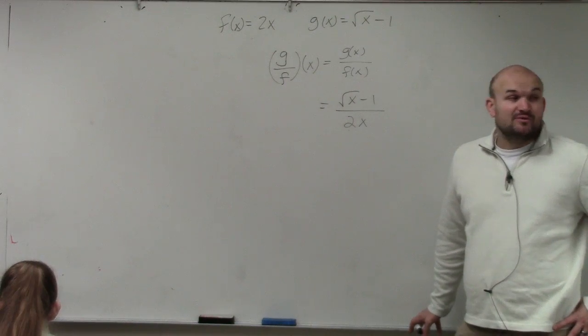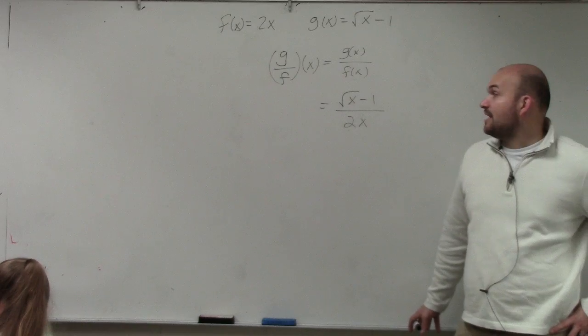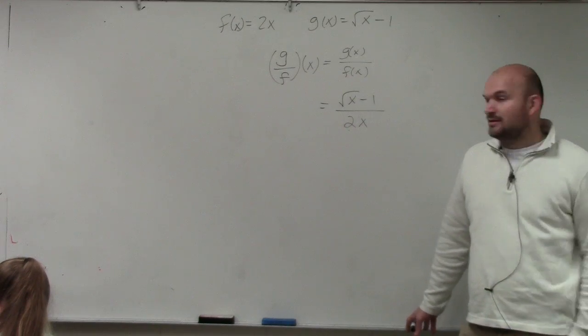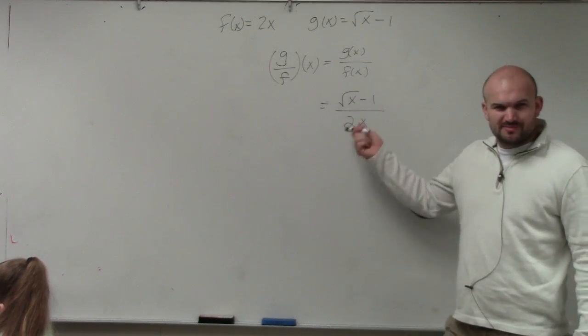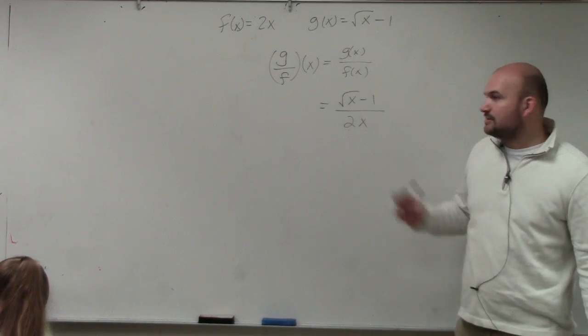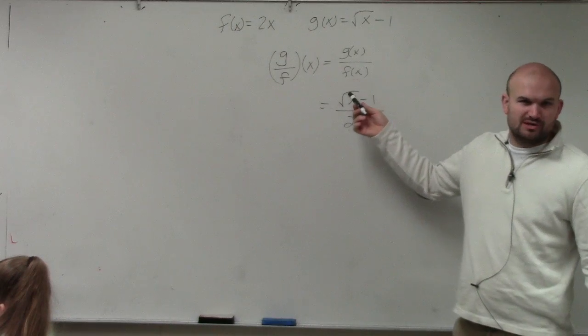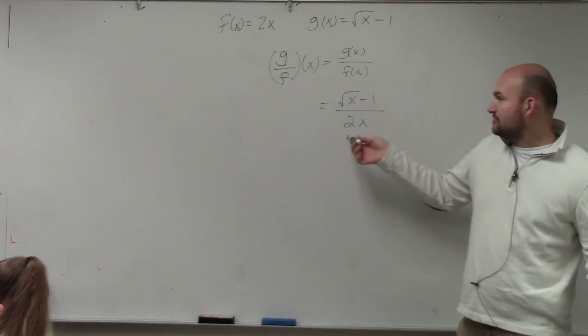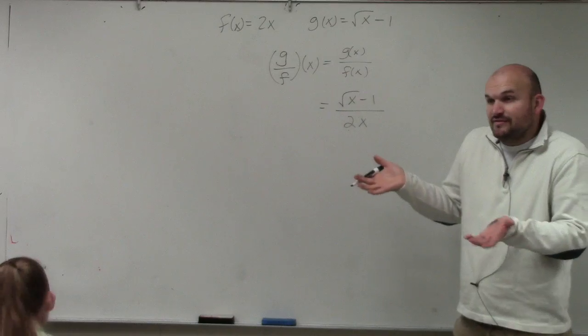Now, can we simplify this? The other problem we can multiply. We could use a distributive property. And yeah, you could distribute throughout this, but we typically say this is like a simplified version. But I can't divide the 2x into the square root of x, can I? Can't really divide the 2x into negative 1. So I'm just going to leave it like this.